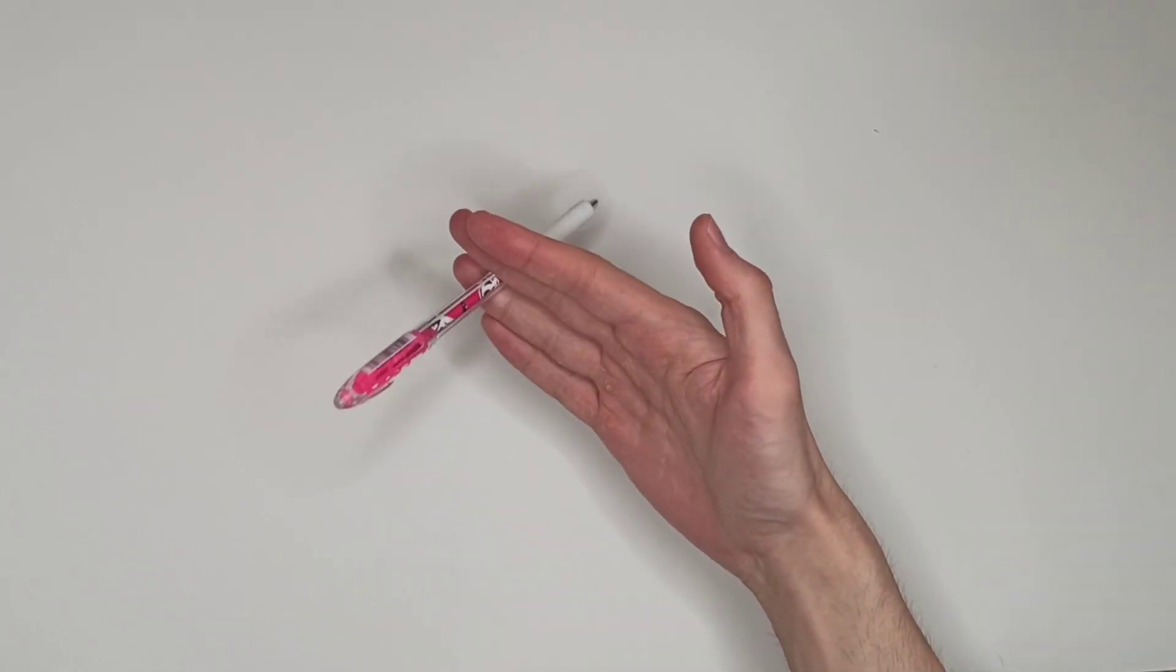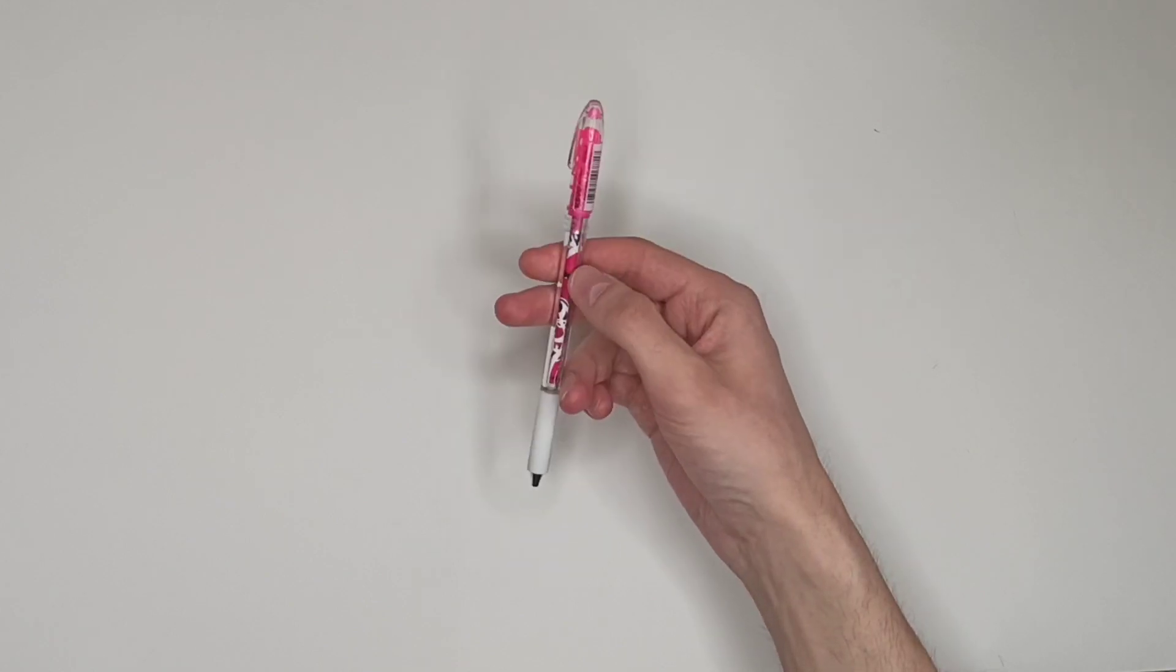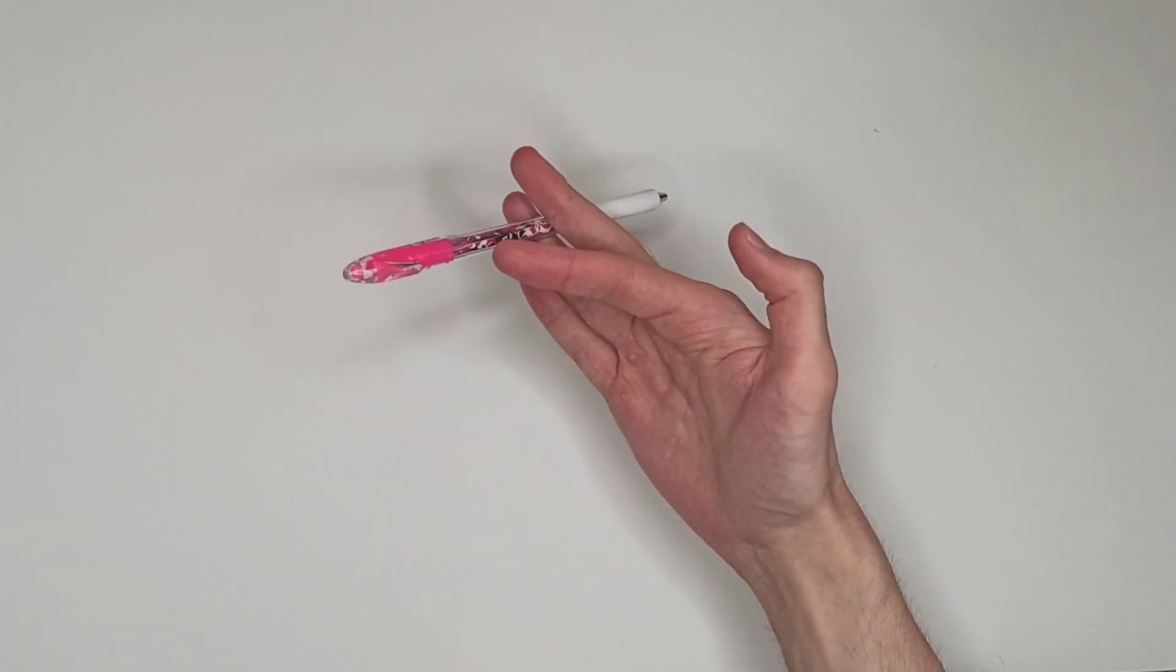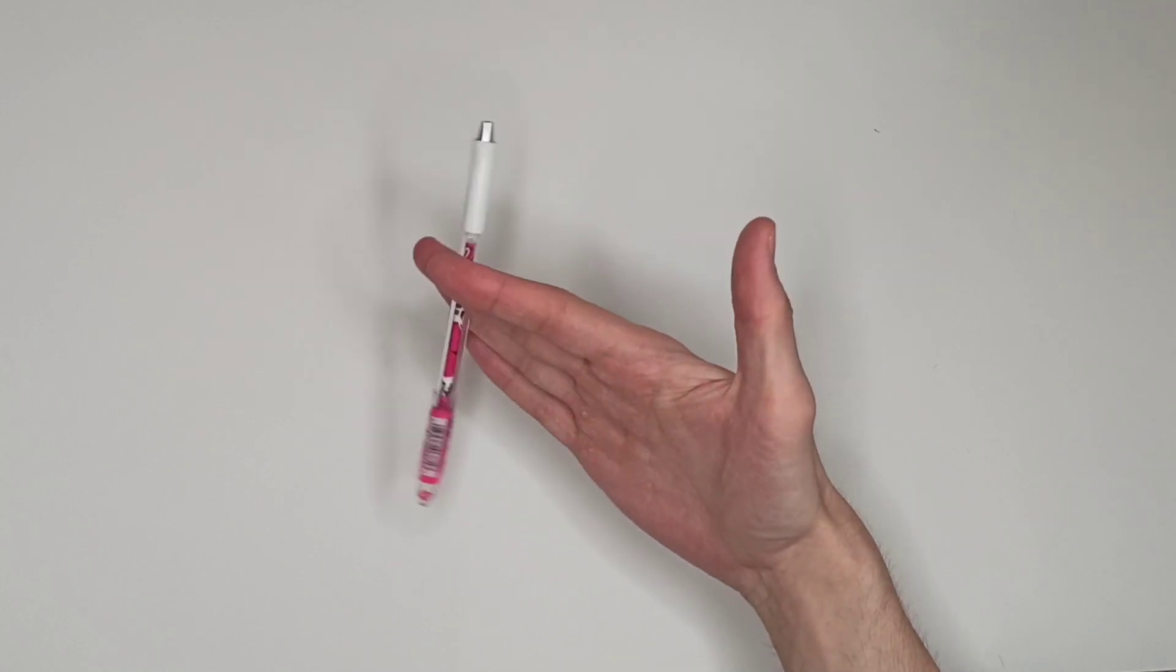From there, twist the pen and hold it with your index and middle finger. Now just grab it with your thumb and get it back to your writing or whatever.